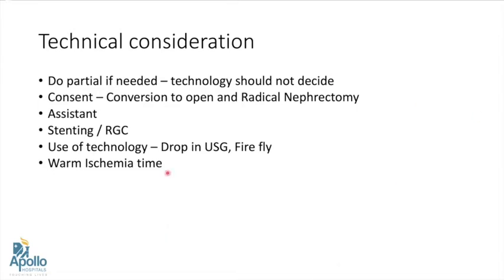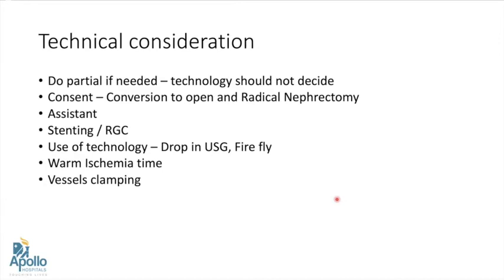Warm ischemia time plays a very important role in partial nephrectomy. However, even if warm ischemia time is increasing, if we can save the nephron by doing a partial, we should always do a partial — but we should always try to shorten the warm ischemia time. For vessel clamping, I clamp only the artery in most cases, except for complex ones where I also clamp the vein, but I remove it very early once the inner layer is done.